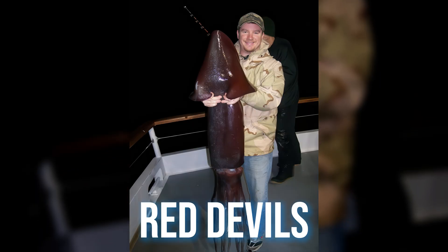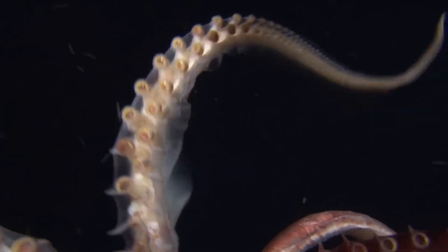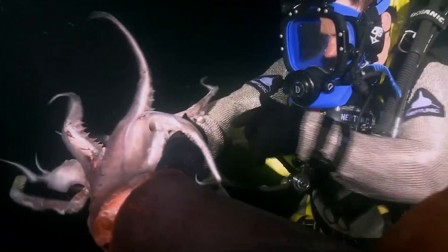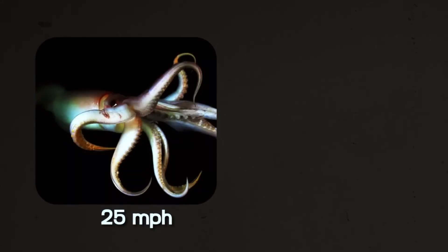Fishermen call them red devils, and for good reason. When hunting, Humboldts don't go alone, they coordinate in organized packs flashing red and white signals across their skin, a biophysical language, controlled by millions of chromatophores and iridophores, pigment cells that can instantly shift color.